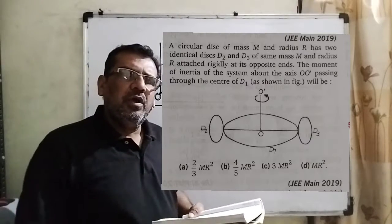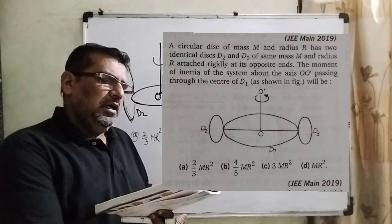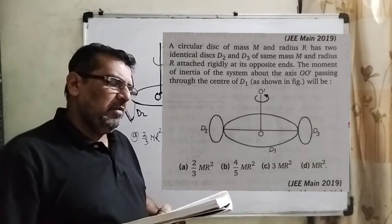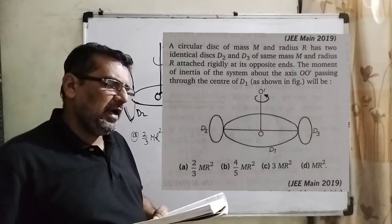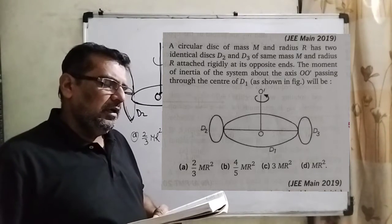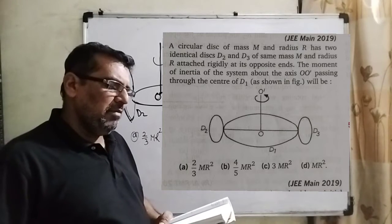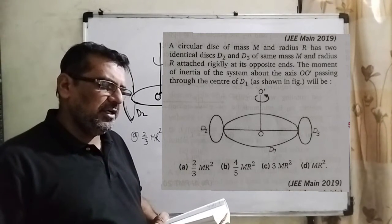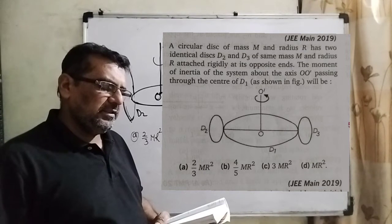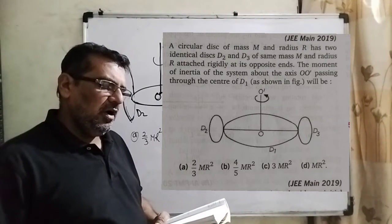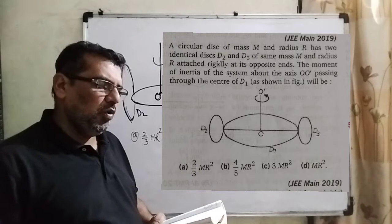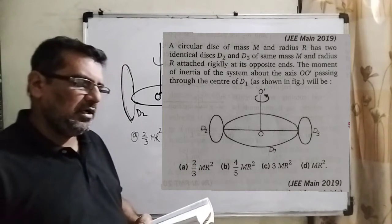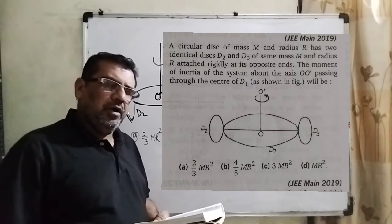Let's see what the question says. A circular disk D1 of mass M and radius R has two identical disks D2 and D3 of the same mass M and radius R attached rigidly at its opposite ends. The moment of inertia of the system about the axis OO' passing through the center of D1 according to the figure.